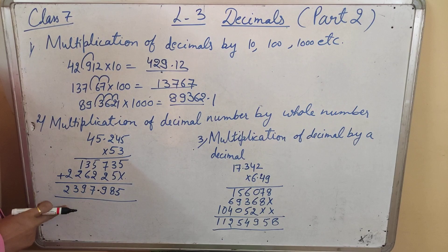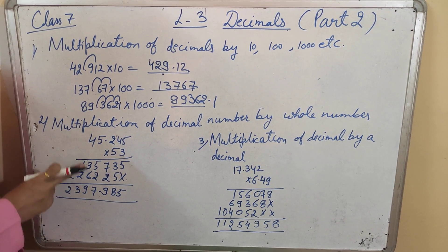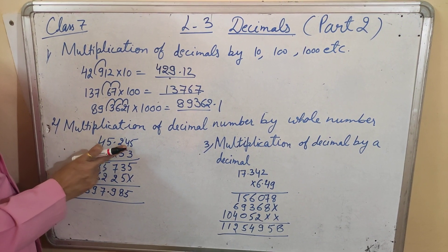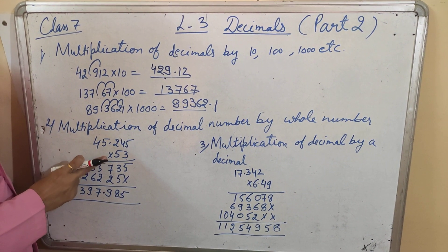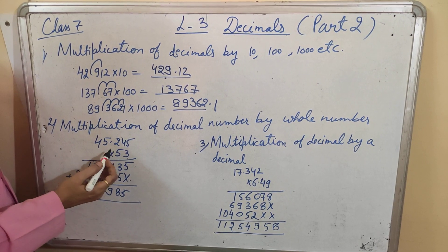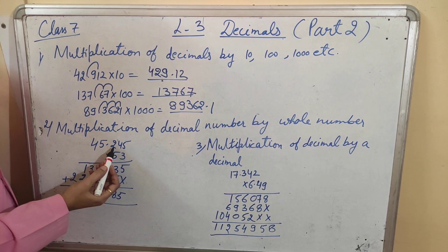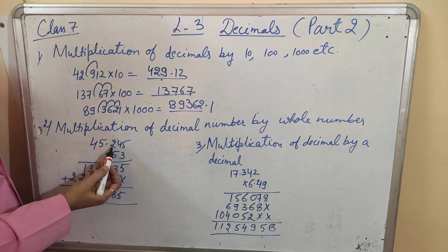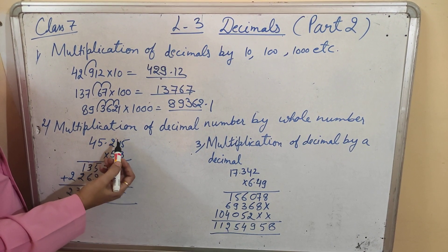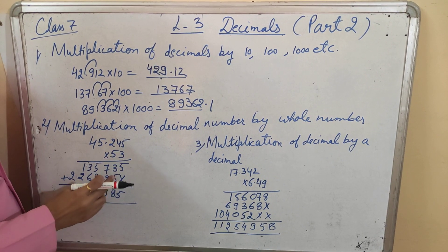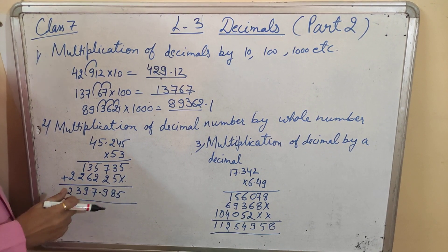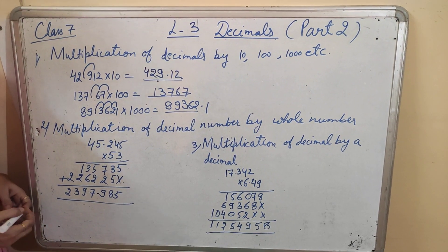This is the answer of the multiplication of 45.245 with 53. You only have to check how many decimal places are after the decimal in the multiplicand, and we have to apply the same number of decimal places in the answer.